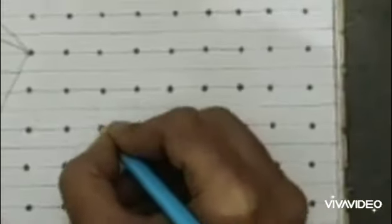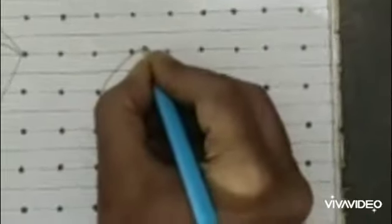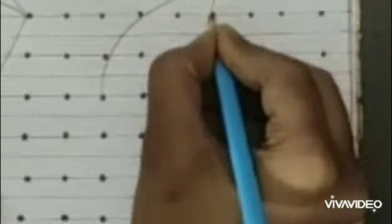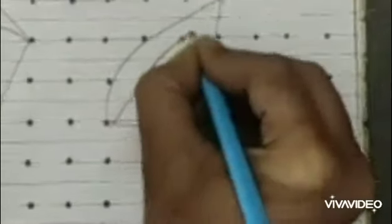Again, second one is leaf. Join this dot and make a leaf pattern. Now, make a flower and boat.